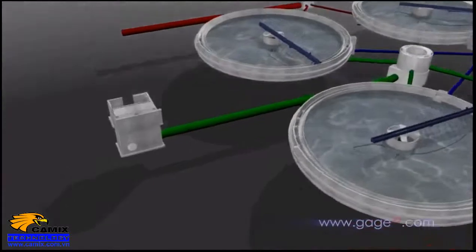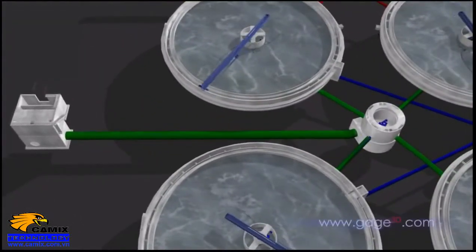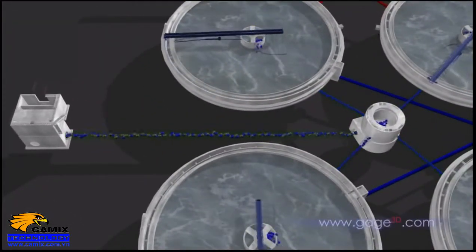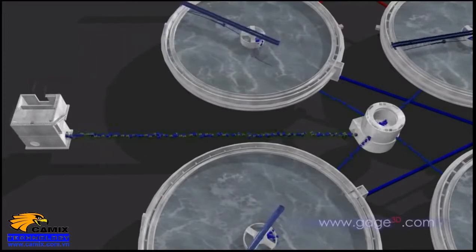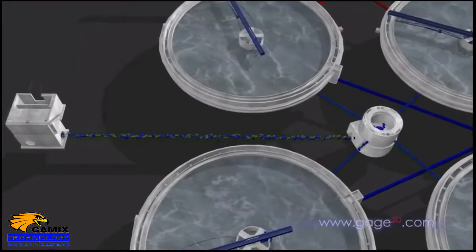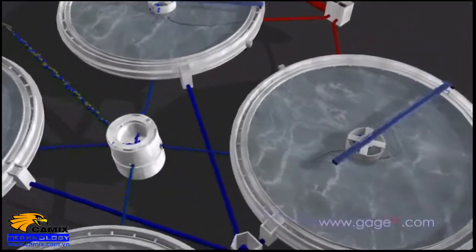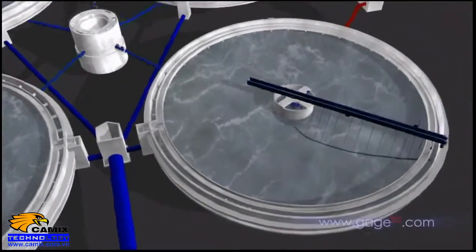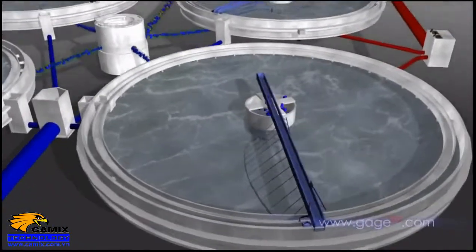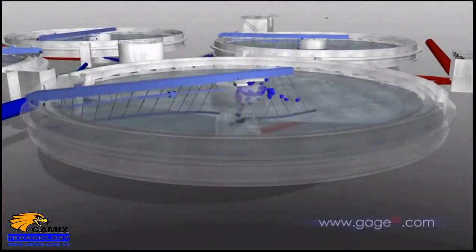Primary clarification is the next step in the treatment process. Wastewater comes up through the center of the clarifier. Water typically sits in the clarifier for one to two hours and becomes quite still. 90-95% of settleable solids fall to the bottom over time and are removed.